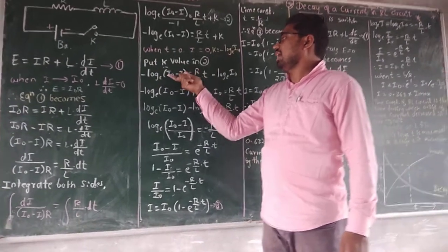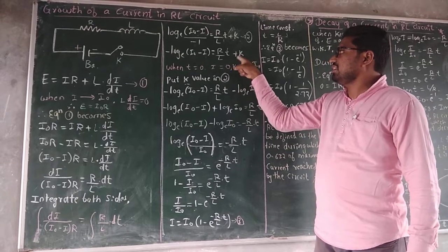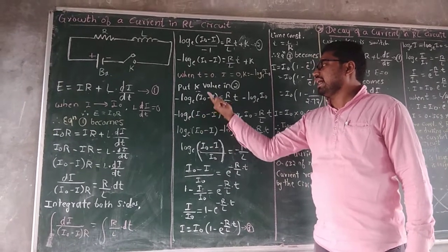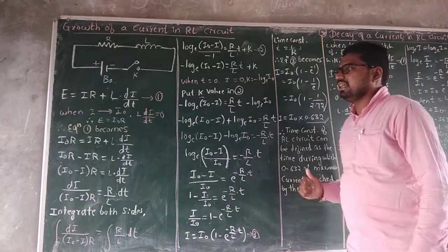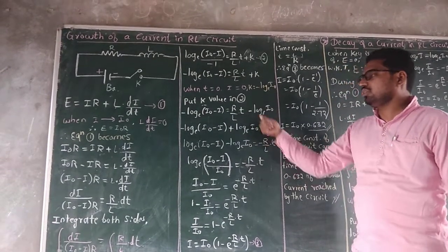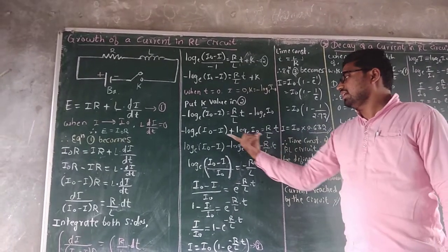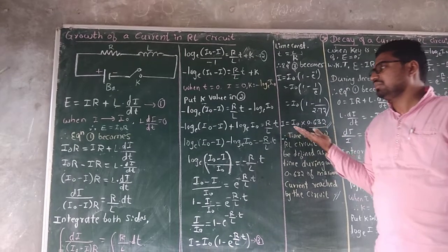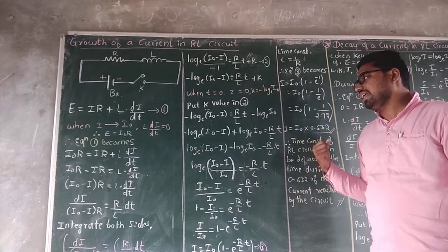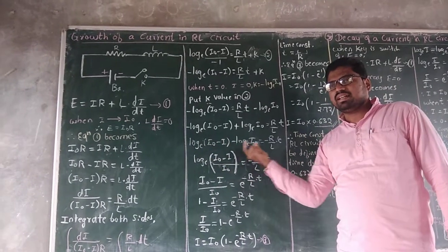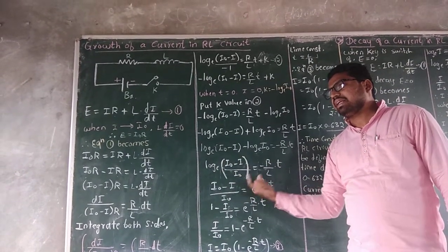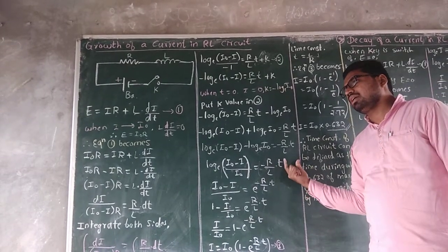We get: log(I₀ - I) = (R/L)T - log(I₀). Taking the log terms to the left-hand side: -log(I₀ - I) + log(I₀) = (R/L)T. Multiplying through by -1: log(I₀ - I) - log(I₀) = -(R/L)T. Using the log rule log(U) - log(V) = log(U/V), this gives log[(I₀ - I)/I₀] = -(R/L)T.